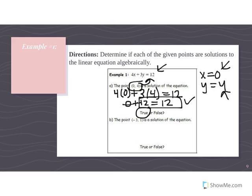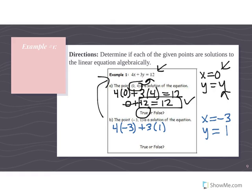Now let's test point (-3, 1) in the same equation. Plug in -3 for x and 1 for y: 4(-3) + 3(1) = 12. That gives -12 + 3 = -9. Negative 9 does not equal 12 — we put a slash through the equal sign and circle it as a false statement.